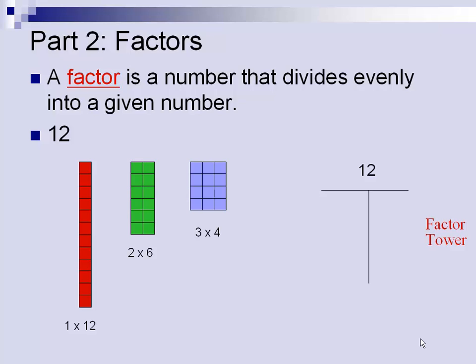When we make the factor tower or the t-chart, we're always going to start with the number 1. 1 will always be a factor for 12, and 1 would pair up with 12. In the factor tower you will see the first numbers as 1 and 12. Then we're going to test every number following 1.